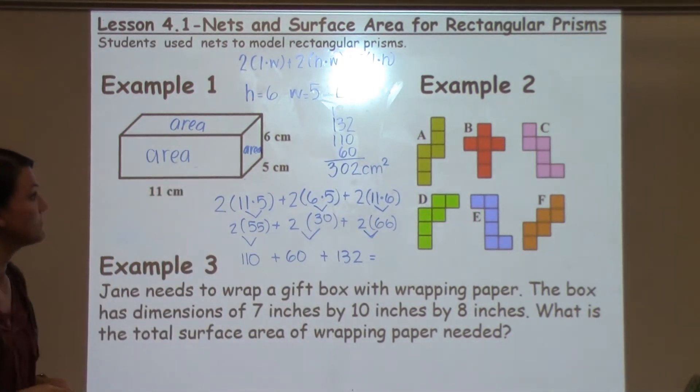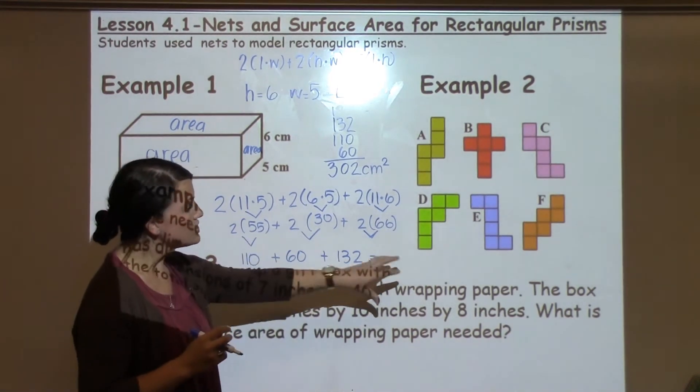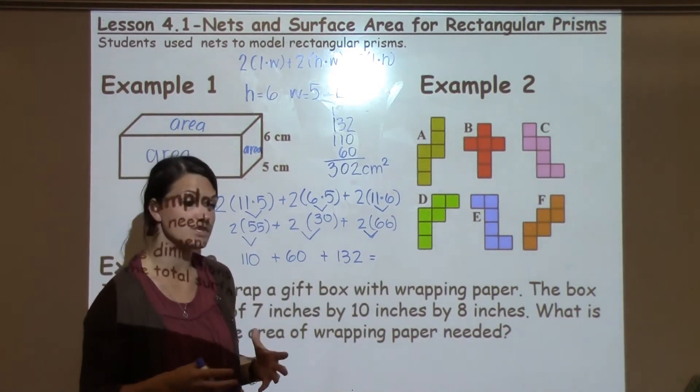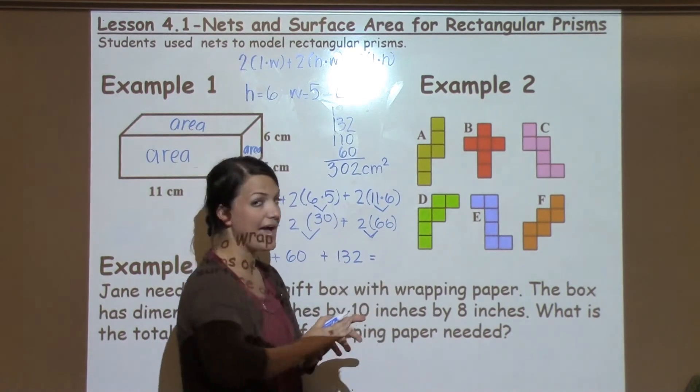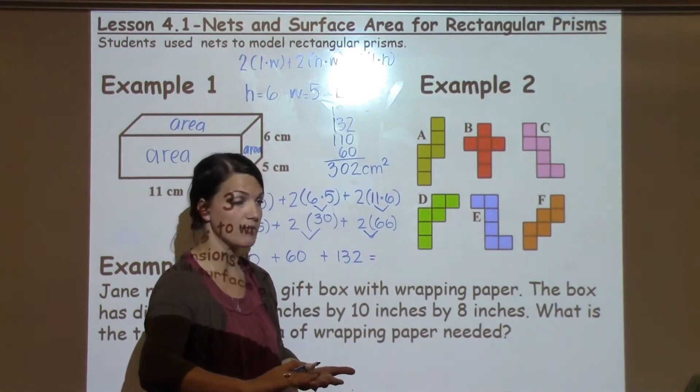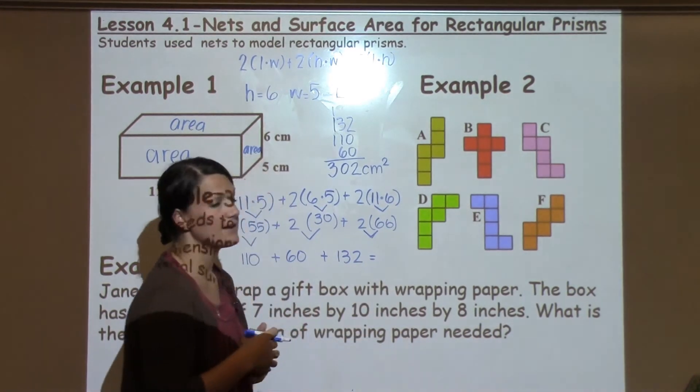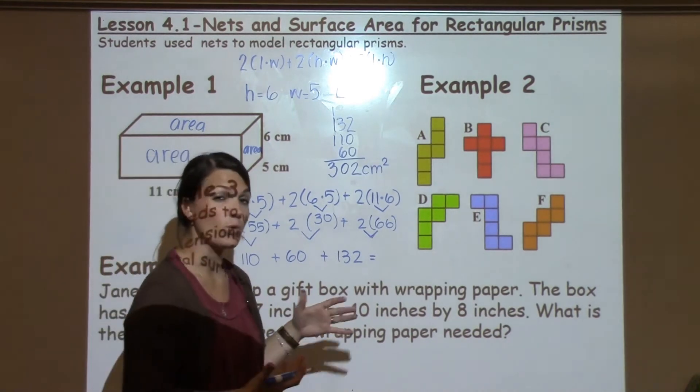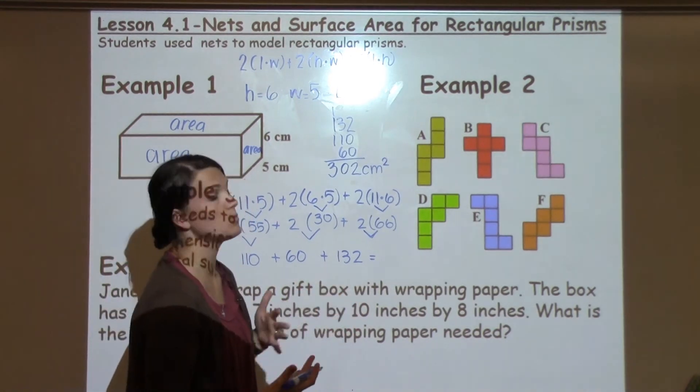Alright, let's take a look at example two. In this lesson, students are introduced to nets, which nets are just a flat representation of a 3D shape. So students are asked to identify and look at which nets would represent a cube and which ones would not.